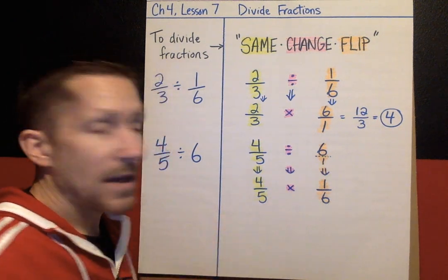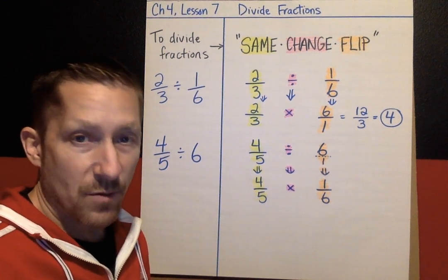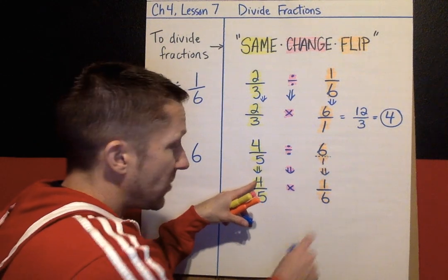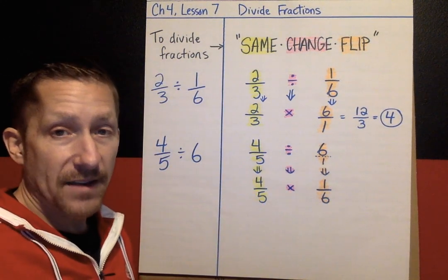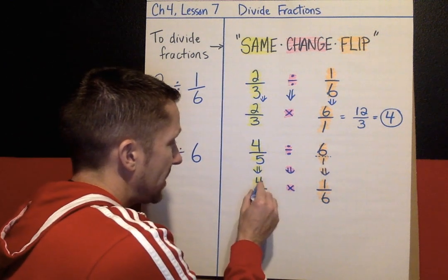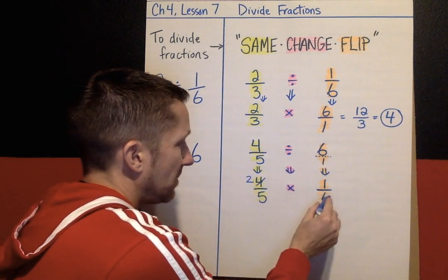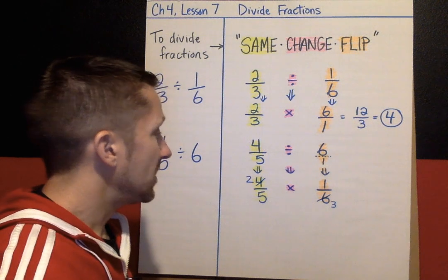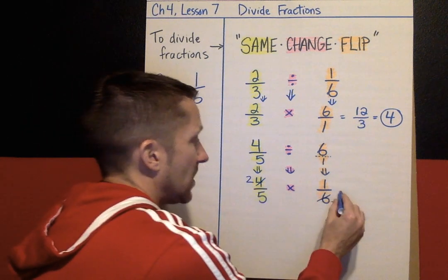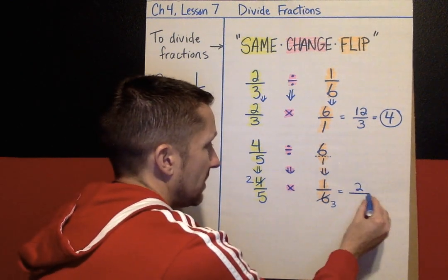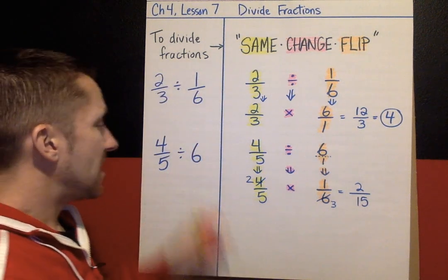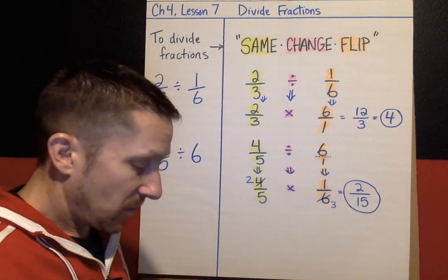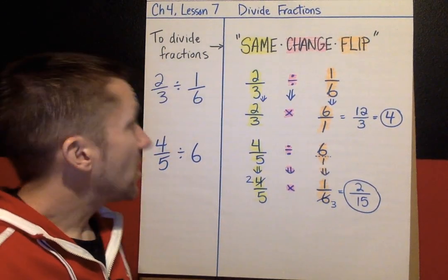Remember, before you multiply is where you can also simplify with any numerator and denominator that have a common factor. The numerator 4 and the denominator 6 — 2 is a common factor for both because they're both even. So I'm going to divide both by 2: 4 divided by 2 is 2, and 6 divided by 2 is 3. That simplifies things before we get to bigger numbers. Now multiply straight across: 2 times 1 is 2, and 5 times 3 is 15. So 4/5 divided by 6 equals 2/15.